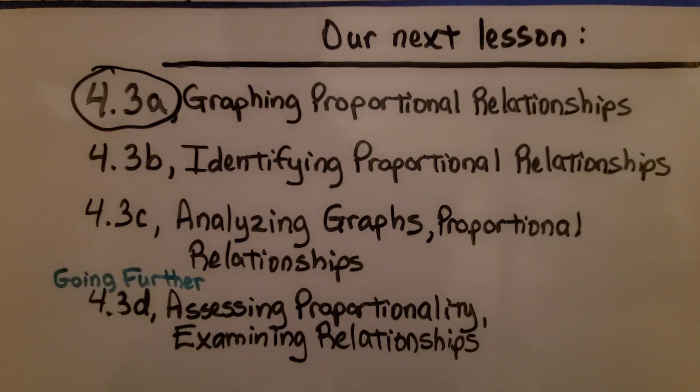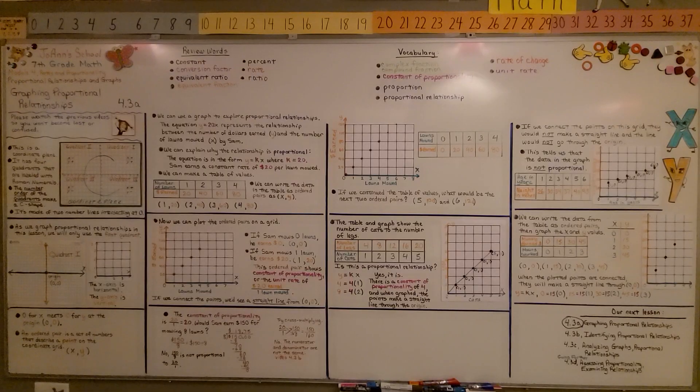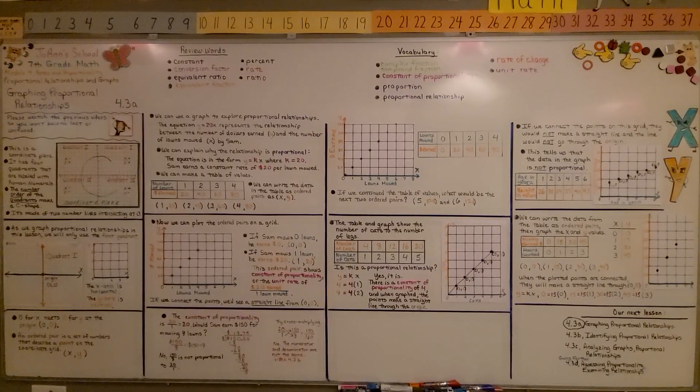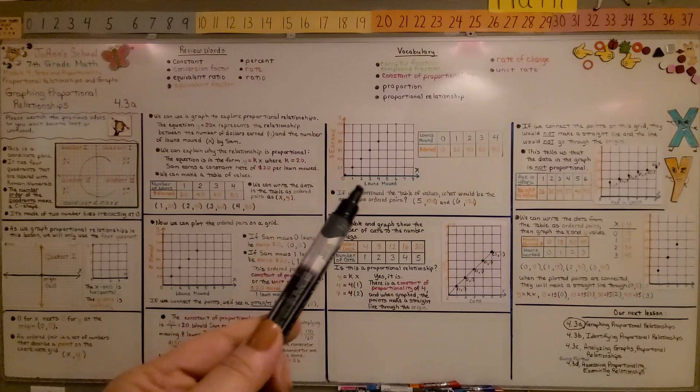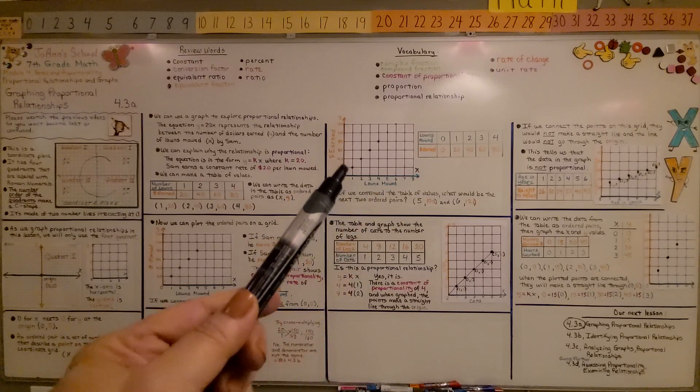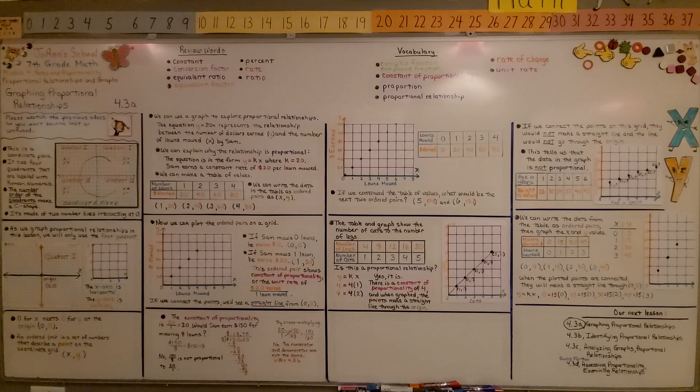We're going to be identifying proportional relationships. We did that a little bit in this one. We're going to really make sure you understand how to identify them in the next video. Remember, as you're plotting the points for your x and y values, the x value is the horizontal and the y value is the vertical. Have a wonderful day and join me for the next part of the lesson.